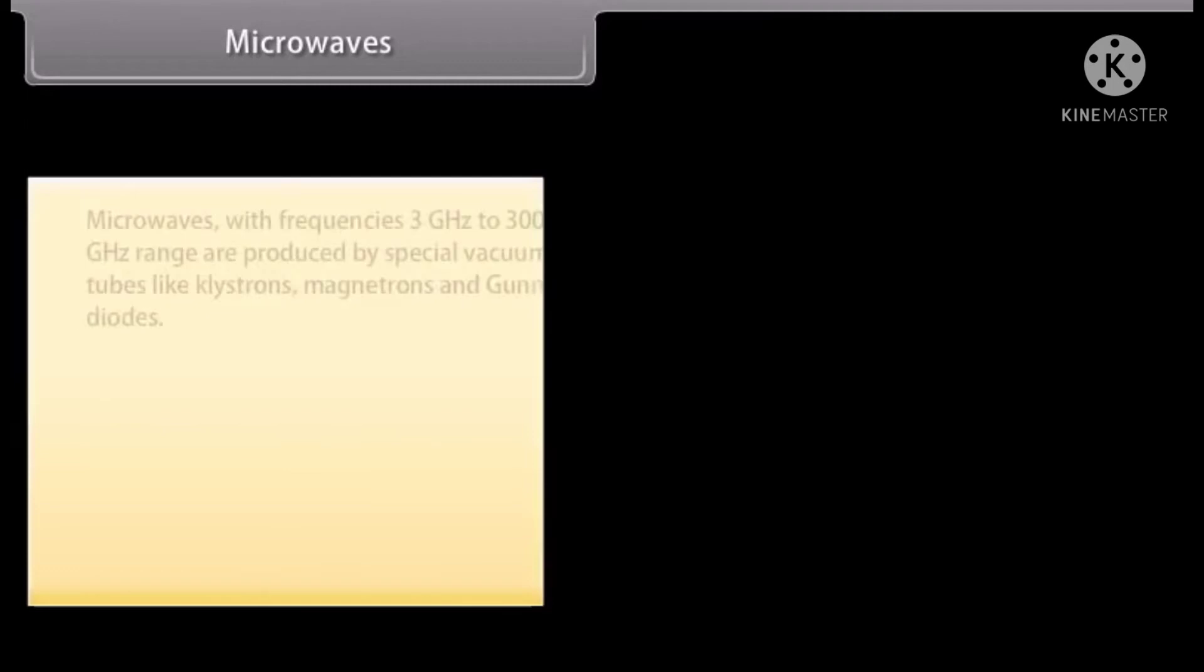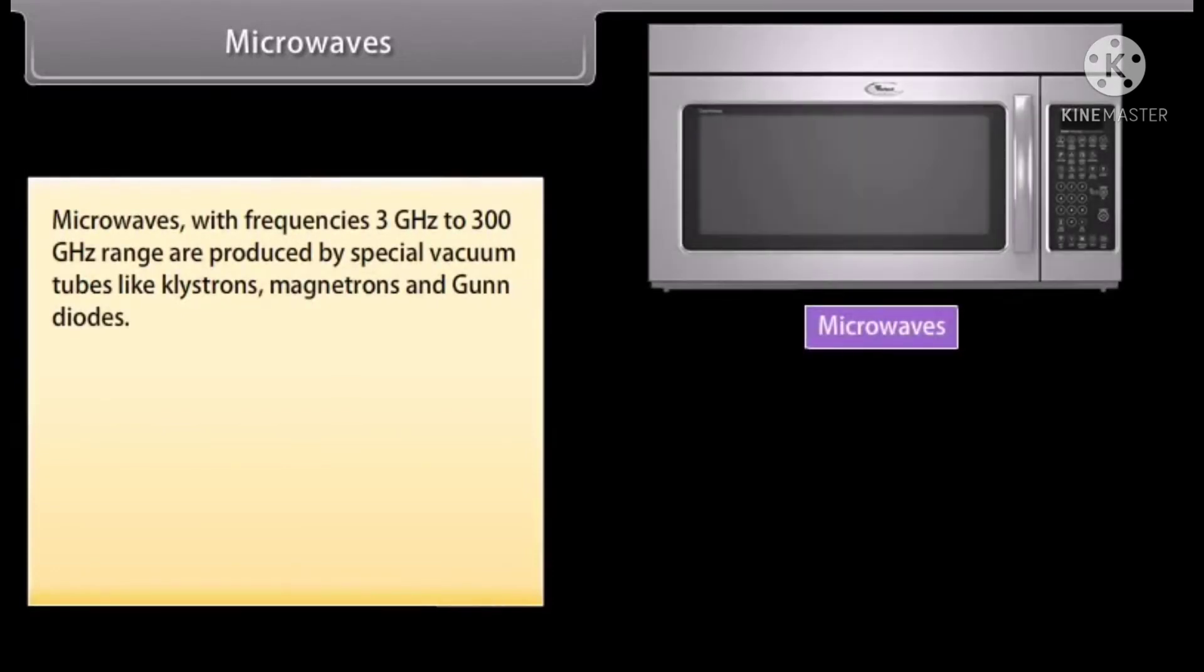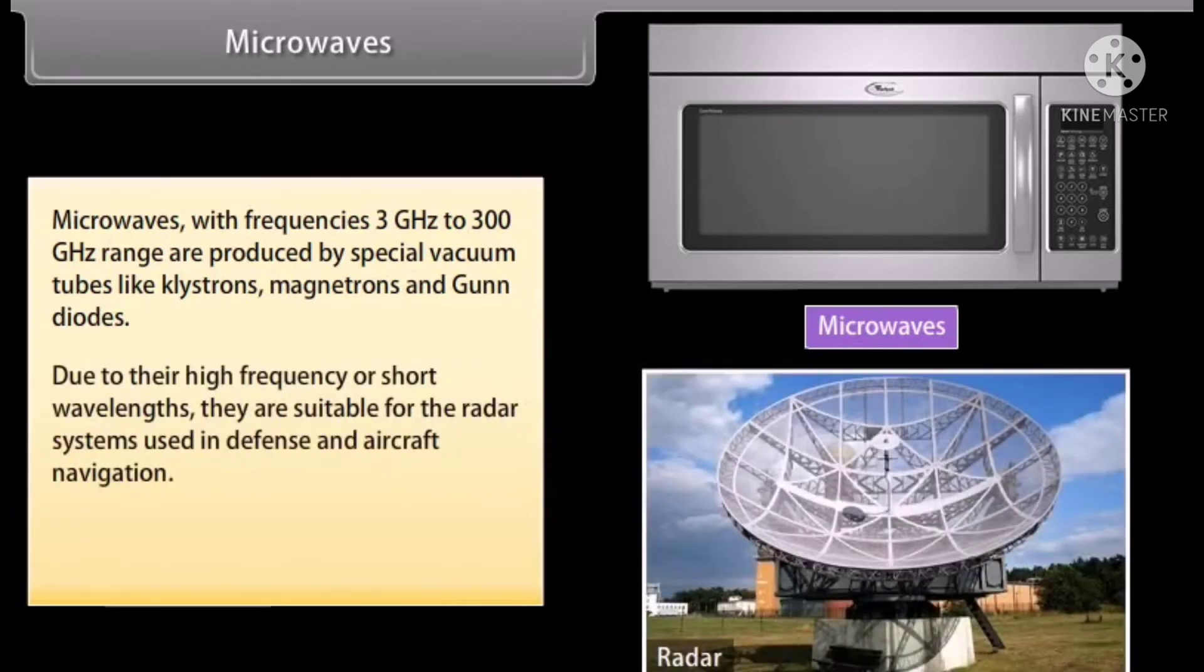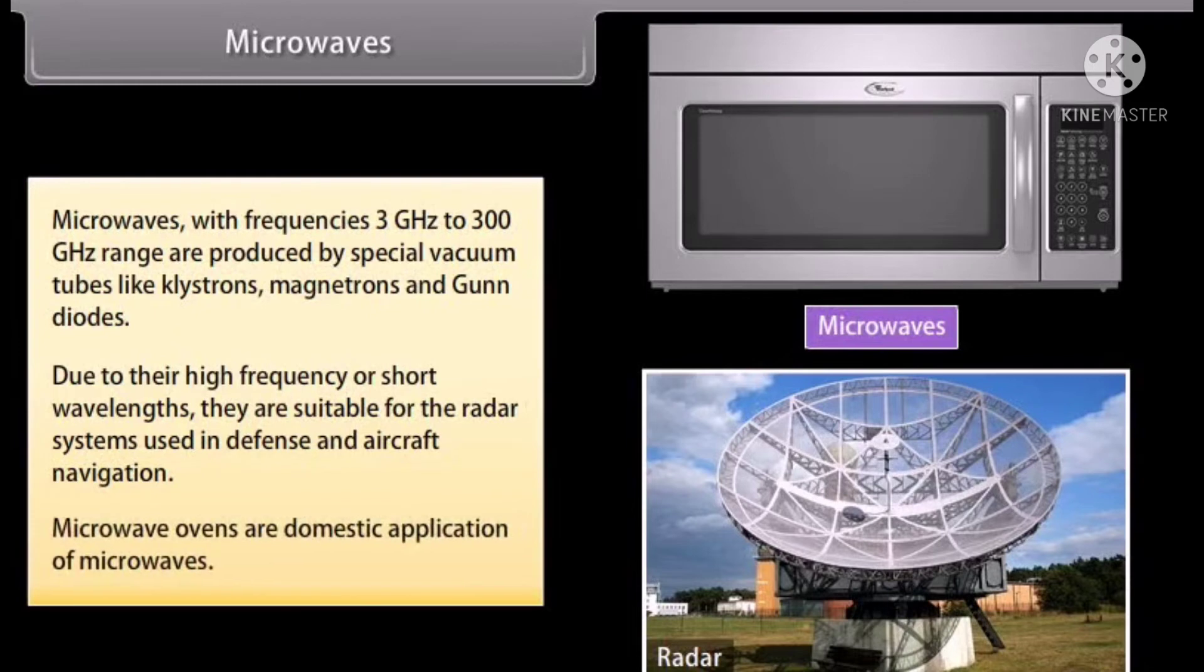Microwaves: Microwaves with frequencies 3 gigahertz to 300 gigahertz range are produced by special vacuum tubes like clistrons, magnetrons, and gun diodes. Due to their high frequency or short wavelengths, they are suitable for the radar systems used in defense and aircraft navigation. Microwave ovens are domestic application of microwaves.